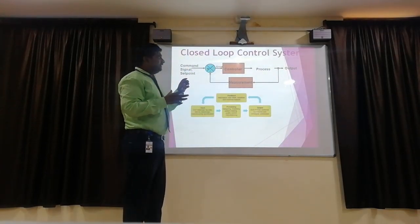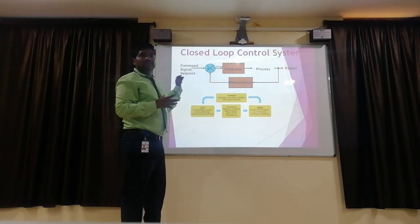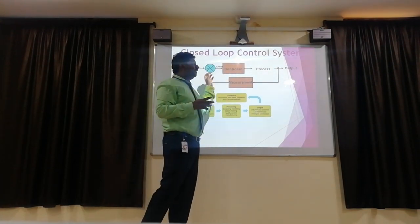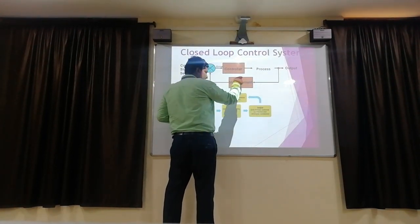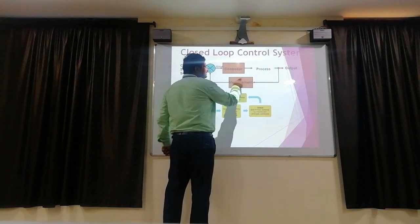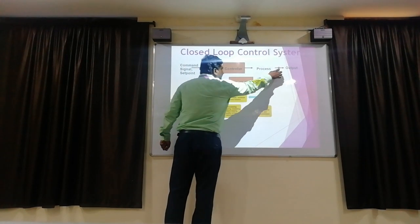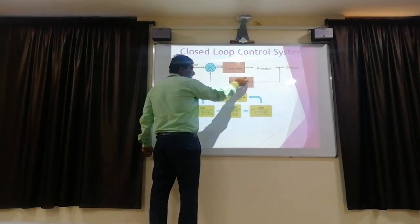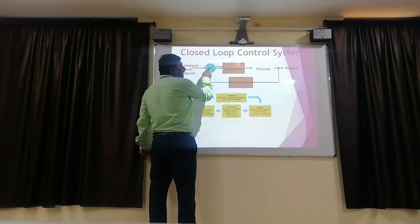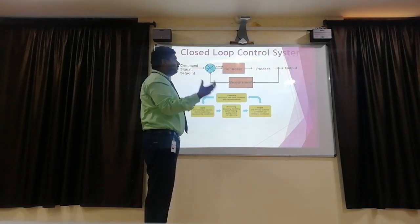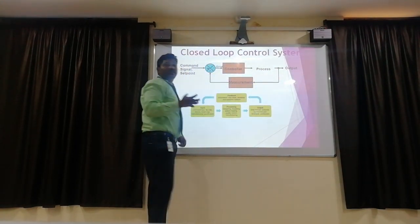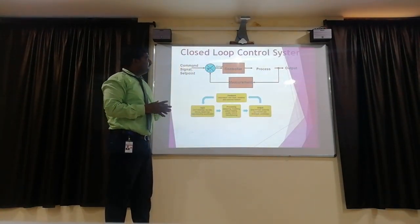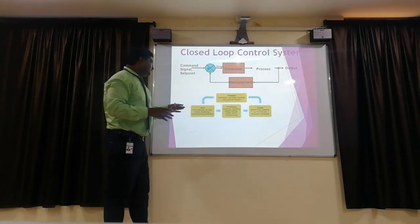In this control system, the input and output are compared. If any error occurs, it comes back through the feedback system — a measurement system — to the error detector. Any error in the output comes back to the feedback system, which supplies the error detector. The error detector then adjusts to finally get the correct output value. That is the concept of the closed loop control system.